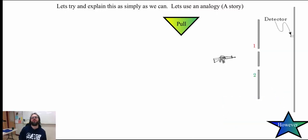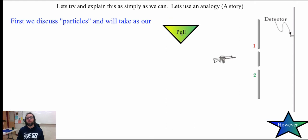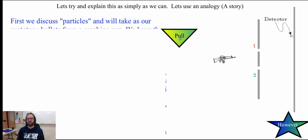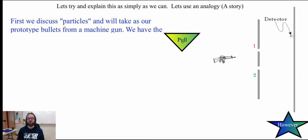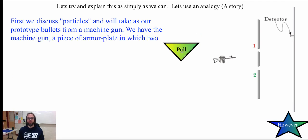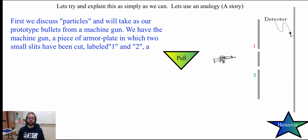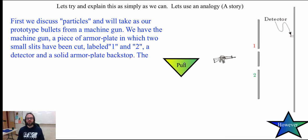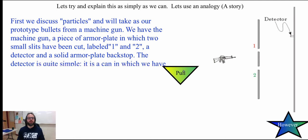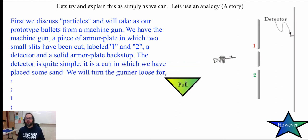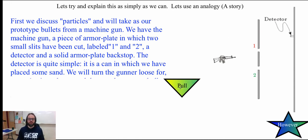Let's try to explain this through an analogy. We're going to start with the particle theory first and discuss what would happen if particles go through two slits. We'll use a machine gun to represent bullets as particles being shot out, and two armor plates with two small slits, labeled slit one and slit two. The detector — a backstop — is just a can filled with sand to catch and collect the bullets.